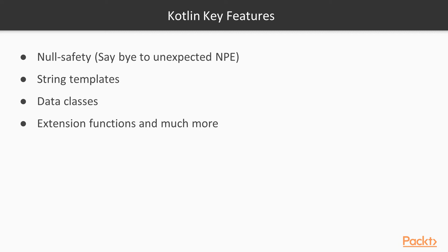Kotlin has a set of key features that are very interesting, especially if you are coming from Java. First, it is null-safe by default, so you avoid null pointer exceptions. It has the concept of string templates that make it easy to compose strings with variables. You have the concept of data classes, which are really amazing. One of my favorites is extension functions, which allow you to extend already-defined classes with functions in your codebase, and much more that we're going to see throughout the course.